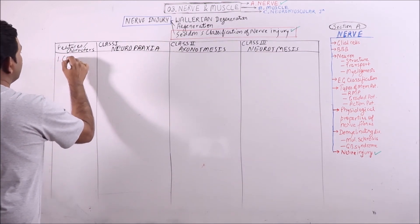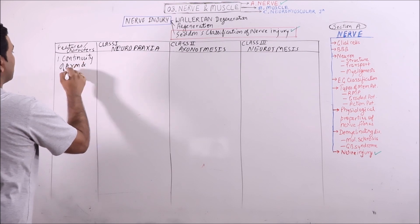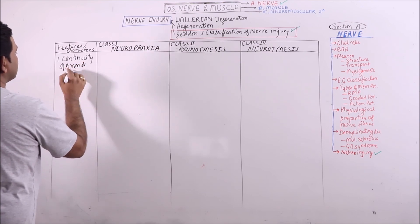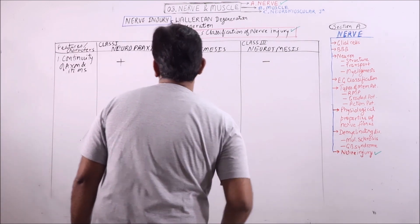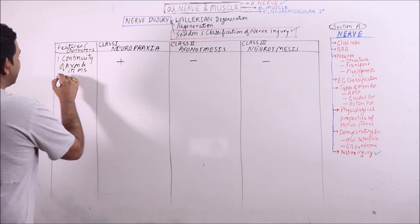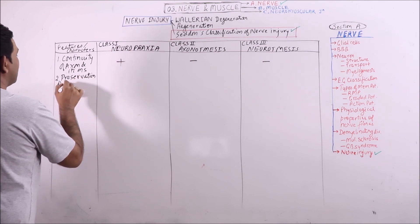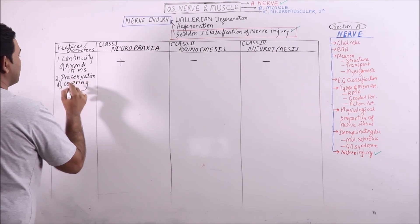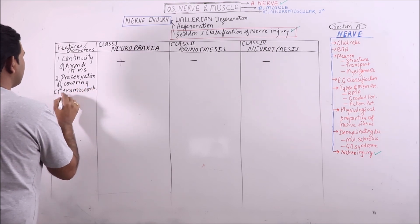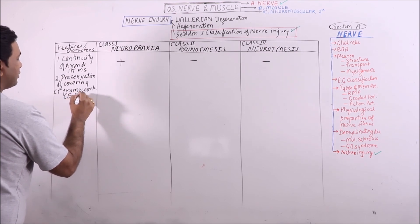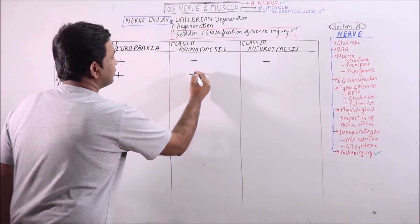Now we are comparing the continuity of the axon and its myelin sheath across these three classes. Next is preservation of the covering connective tissue framework, which involves the endoneurium, perineurium, and epineurium.